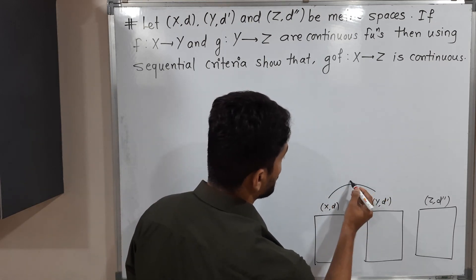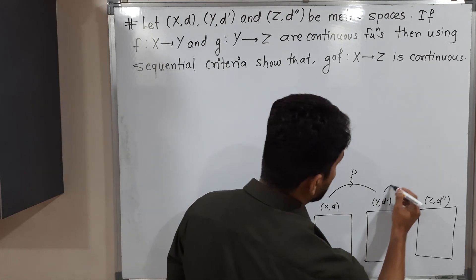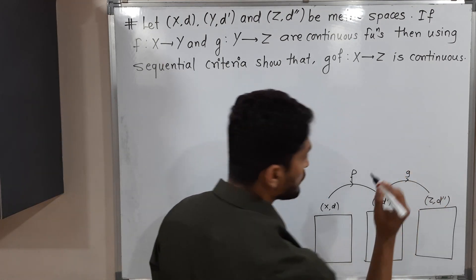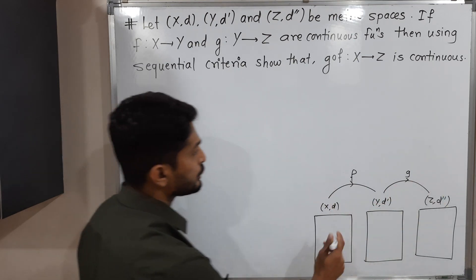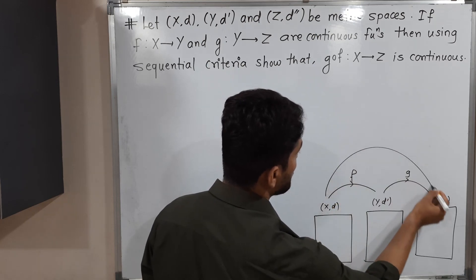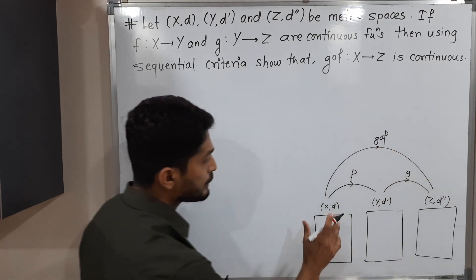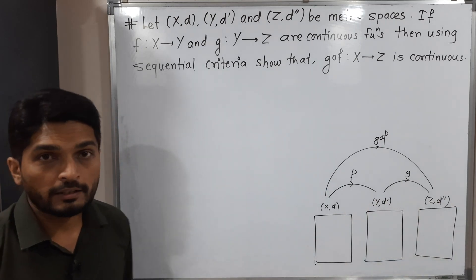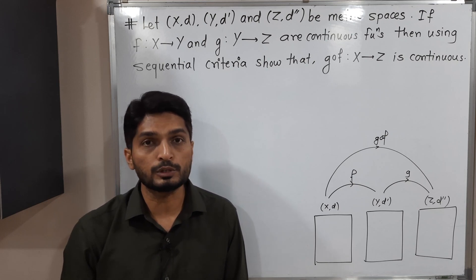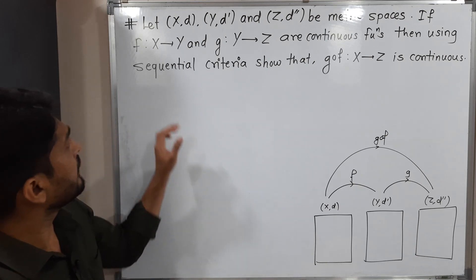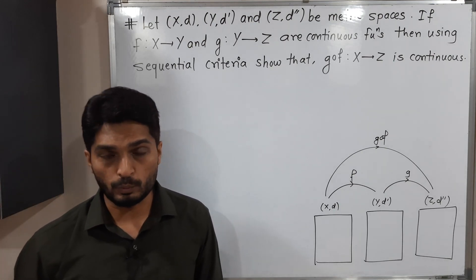We have two continuous functions: the first function F is a continuous function from X to Y, and the second function G is also a continuous function from Y to Z. The composition of these two functions is the third function G composite F, which is from X to Z. We have to prove that if F and G are continuous, then their composition G composite F is also continuous.